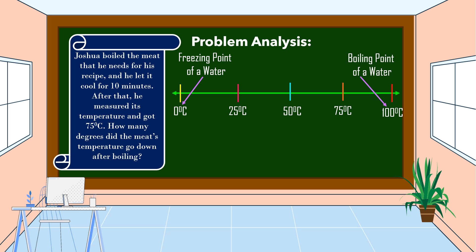If the temperature goes down to 75 degrees Celsius, then to know how many degrees the meat's temperature went down after boiling and letting it cool for 10 minutes, we subtract 100 degrees Celsius minus 75 degrees Celsius, which gives the answer of 25 degrees Celsius.